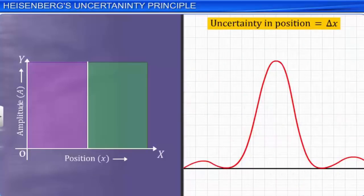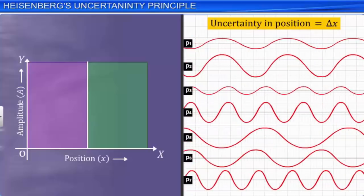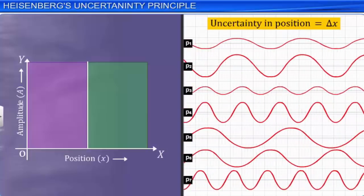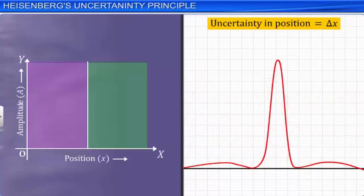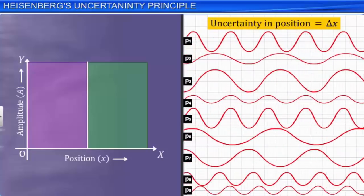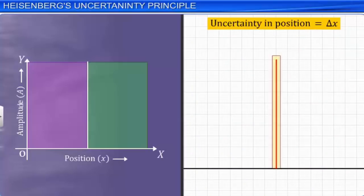If we look at the superimposition of an increased number of wave functions representing various components of different momentums of the particle, the superposed wave function has a sharper peak than before. This means that the uncertainty in the position of the particle, delta x, has decreased. As we go on increasing the number of superimposing wave functions representing the components of different momentums of the particle, the single wave function obtained by their superimposition results in a narrower peak. When infinite wave functions representing different components of momentums of the particle are superimposed, we get a single wave function with a very sharp peak, and the uncertainty in the position of the particle is reduced to zero. Thus, we can locate the position of the particle with maximum possible accuracy.